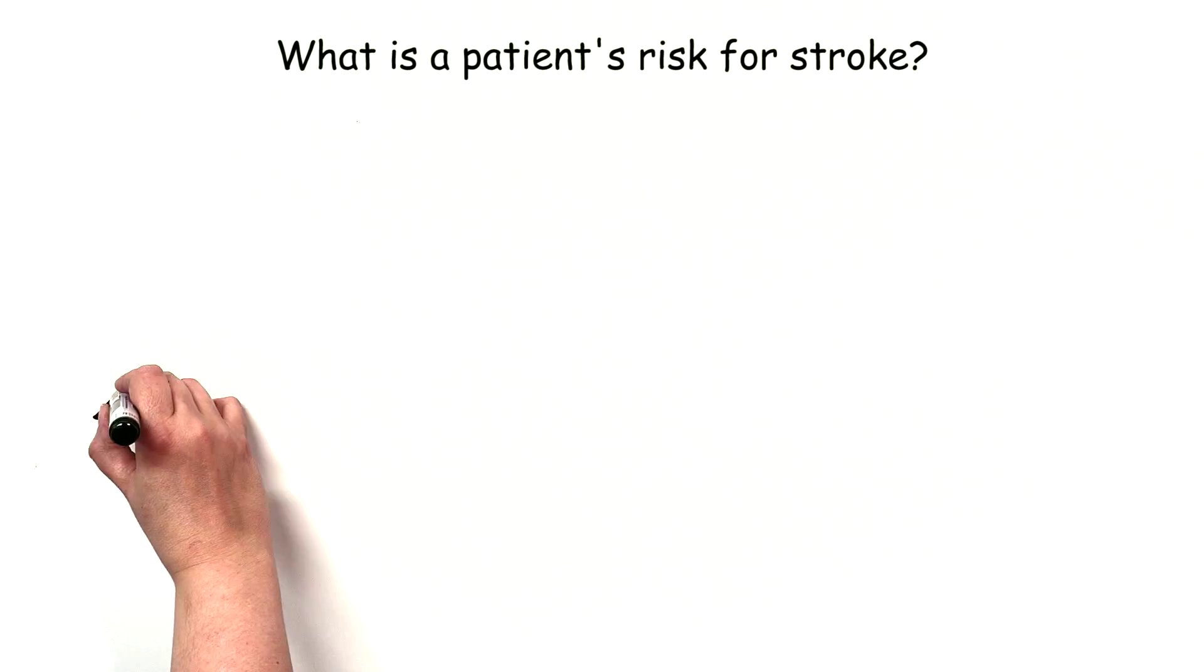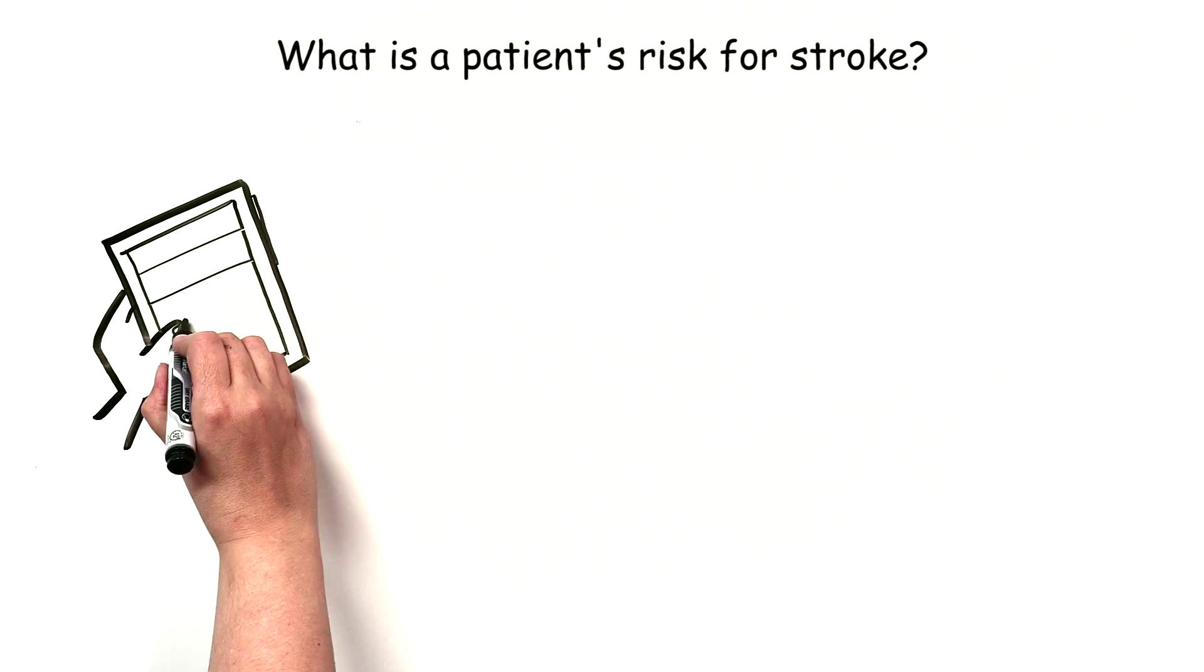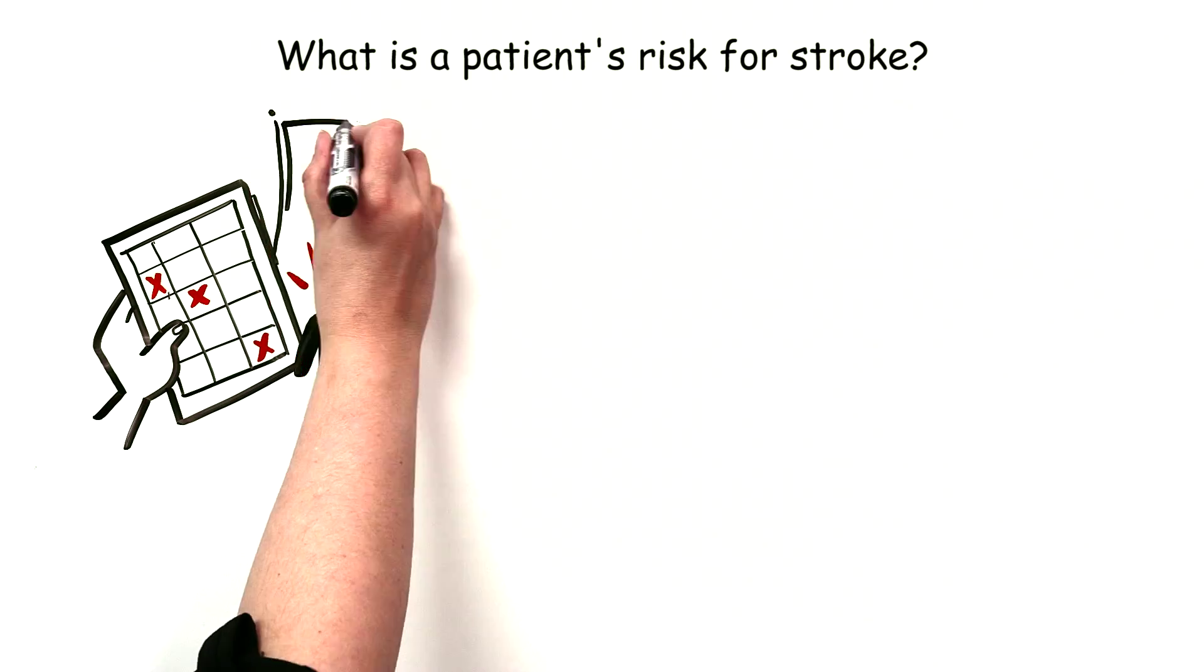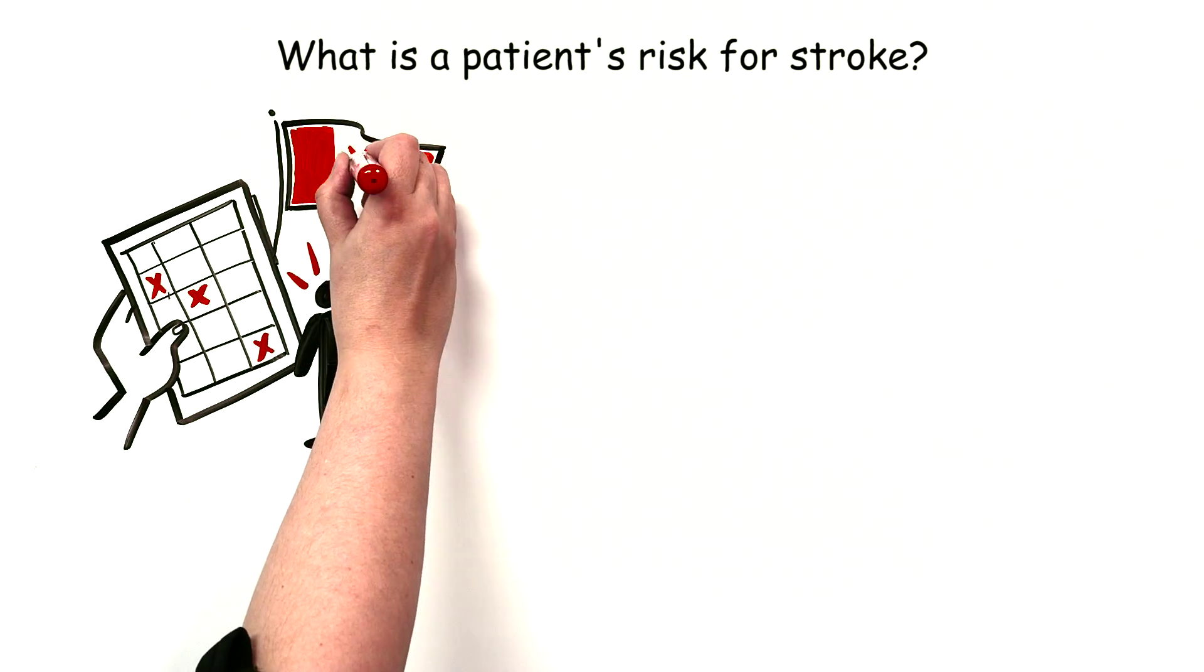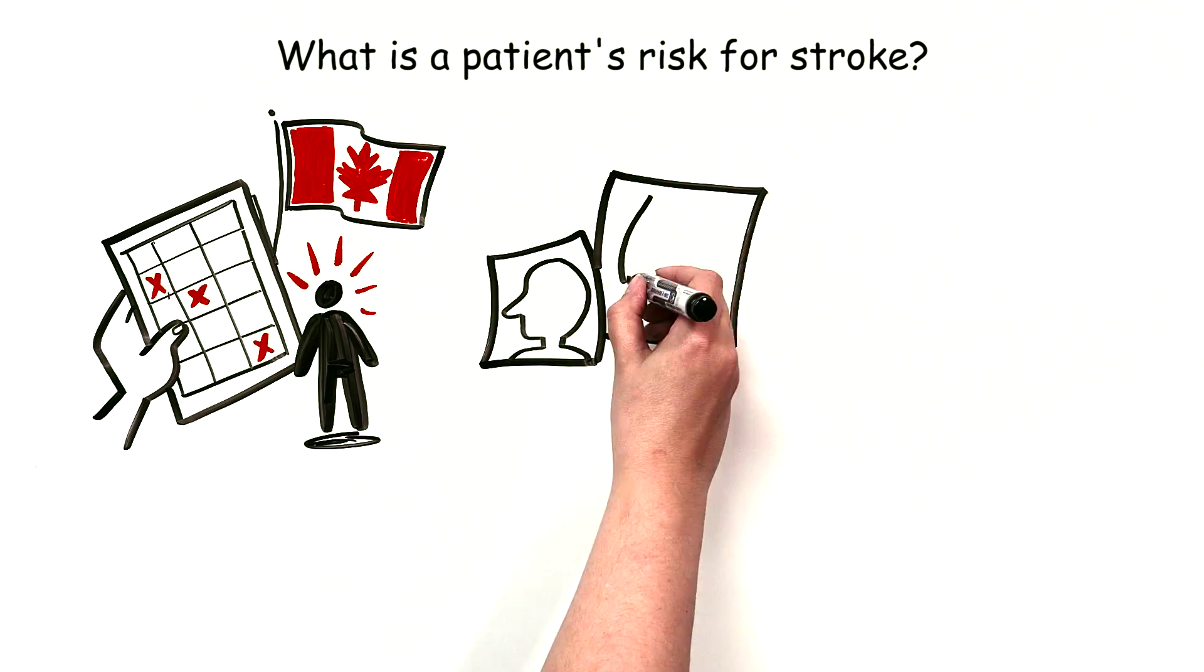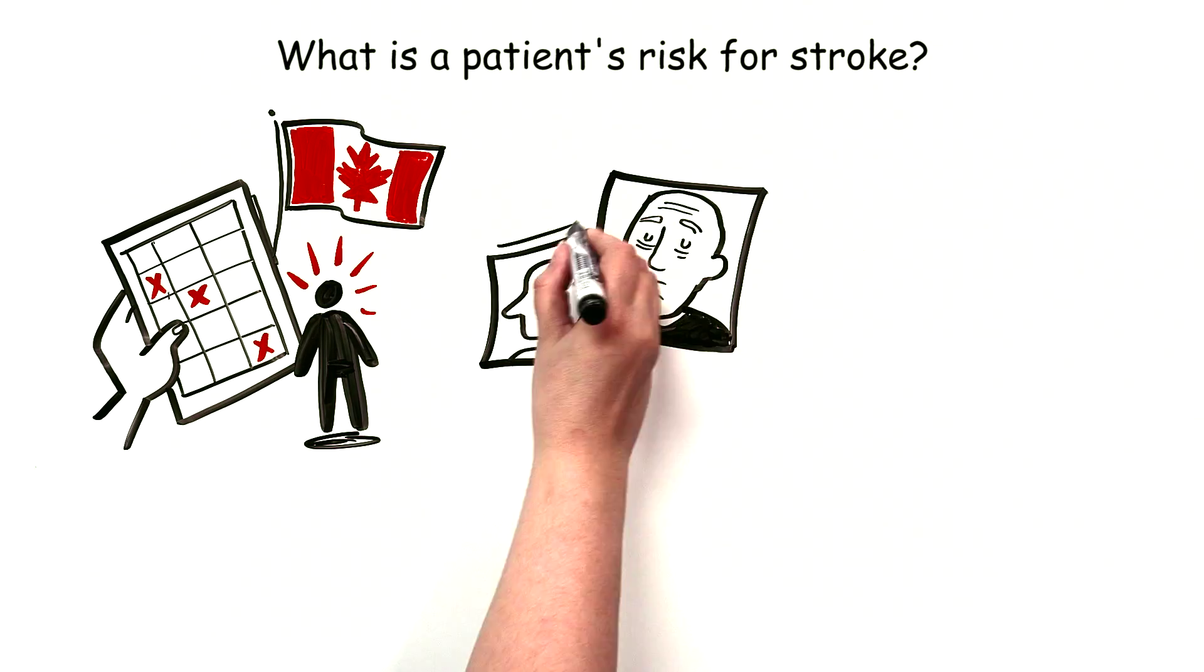What is a patient's risk for stroke? CHADS-2 or CHADS-VASC scoring can calculate stroke risk, and new Canadian guidelines for stroke prevention and atrial fibrillation make this easy, i.e., treat if over age 65 or any other risk factor for stroke.